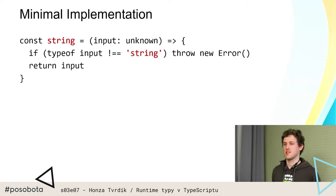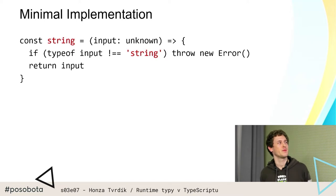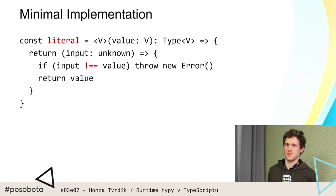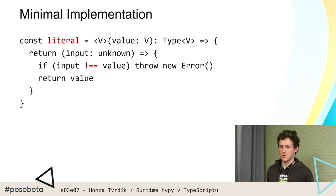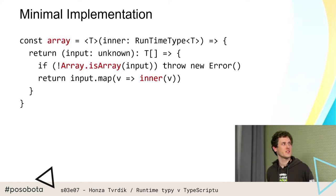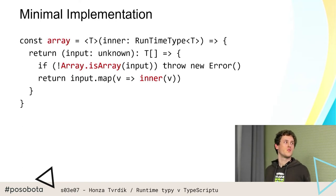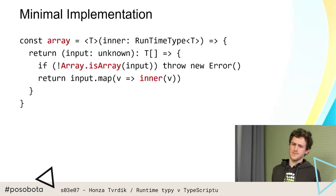Úplně minimální implementace: stringový validátor, numberový validátor — vypadají plus minus stejně. Literal — ten dostává nějakou hodnotu, kterou máte kontrolovat, to je nějaký konkrétní string nebo konkrétní číslo, ten to porovná, buď přesně sedí a je to v pohodě, nebo nesedí a vyhodí error. Array je zase velice jednoduchý — ten navíc akceptuje nějaký parametrický array, musí dostat jakoby array čeho. Takže jako parametr tomu array dáte třeba number nebo string, jak víte, že to je třeba array čísel. On zkontroluje, že input je array, a pokud to teda je array, tak sub-typ, který se předává jako parametr — inner — musí platit pro všechny ty hodnoty.